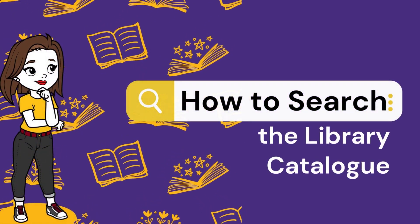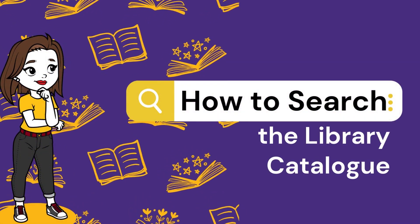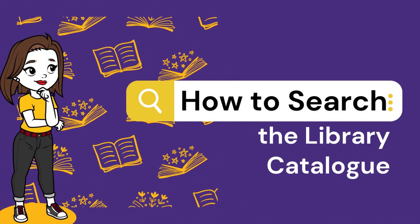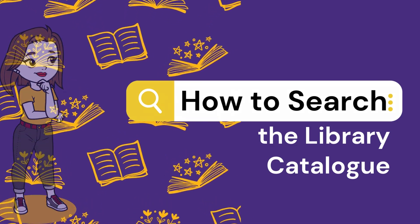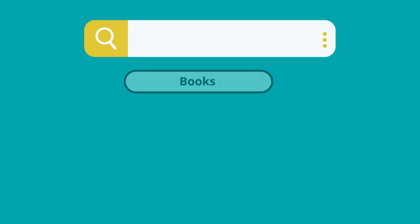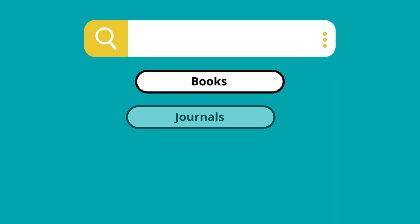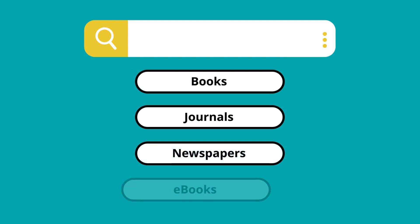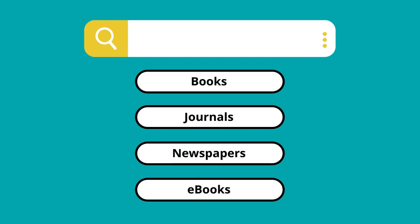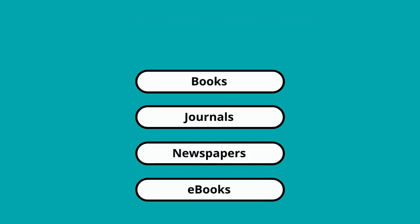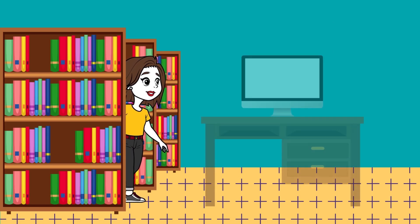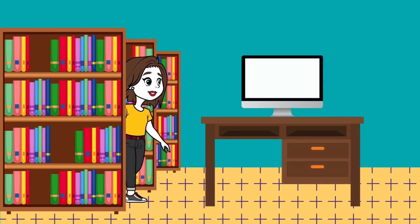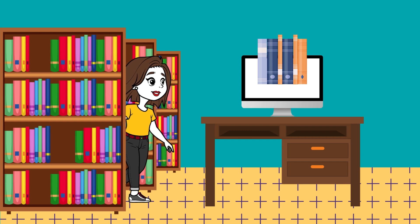Welcome to the University Librarian YouTube channel. Today we're looking at how to search the Library Catalog. The University Library Catalog is a list of resources curated by the subject librarians and your lecturers to support your core subject area. The Library Catalog will help you find digital and physical resources when you are starting an assignment.